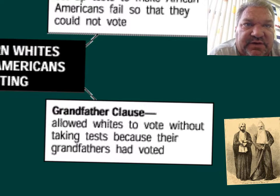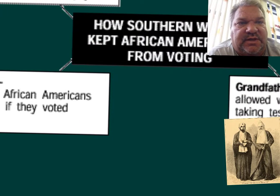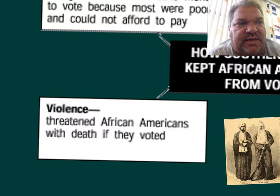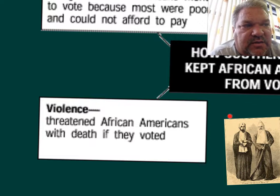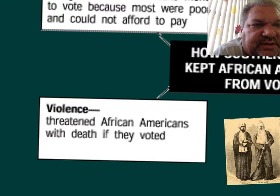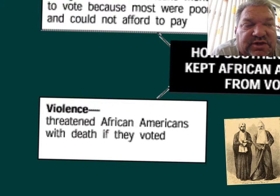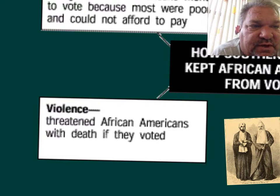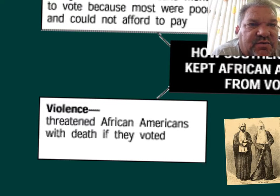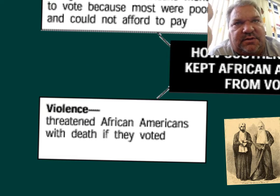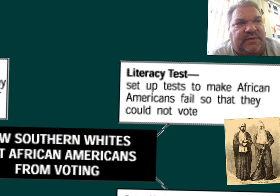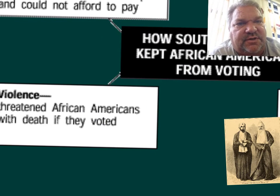There was one other way to keep them from voting, and it was violence. The whites also had the KKK — the Ku Klux Klan — a violent group of people that would actually threaten African Americans with death. They would lynch people and burn their homes. So that was the last way they kept the freedmen from voting — by fear. So the main points are: the poll tax, the literacy test, the grandfather clause, and fear and violence.